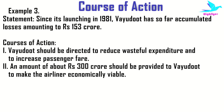Next example: the statement is — since its launching in 1981, Vayudyut has so far accumulated losses amounting to rupees 153 crores. The first course of action is: Vayudyut should be directed to reduce wasteful expenditure and to increase passenger fares. The second course of action is: an amount of rupees 300 crores should be provided to Vayudyut to make the airliner economically viable.